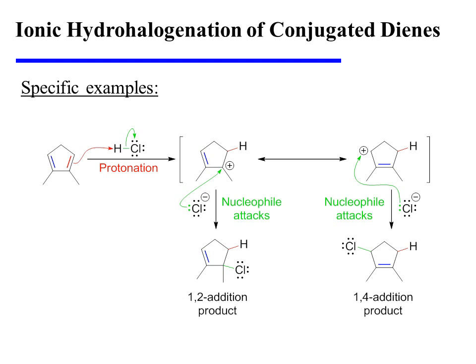At lower temperatures, the 1,2 addition product would be favored due to the proximity effect, which makes it the kinetically favored product.